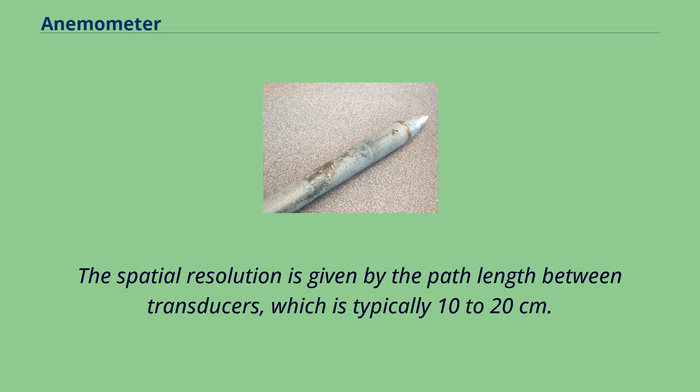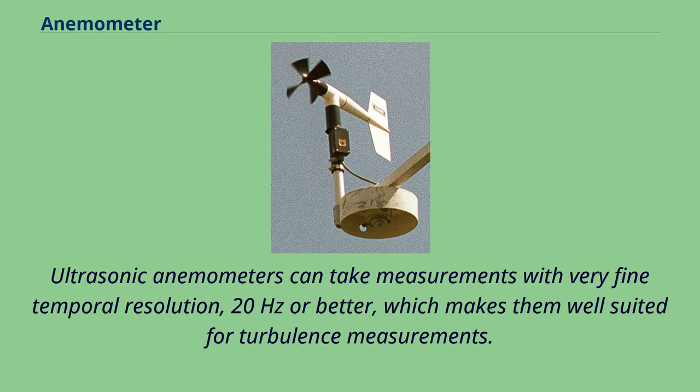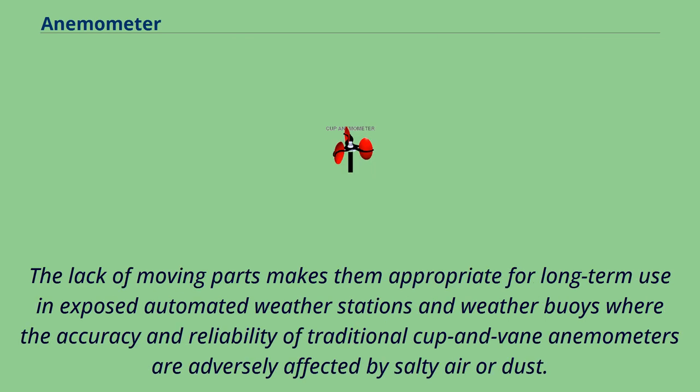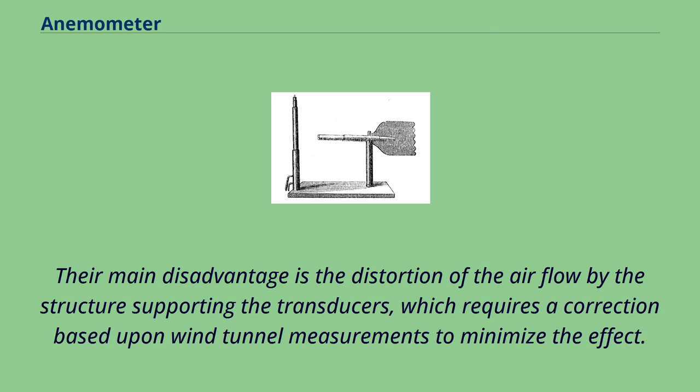The spatial resolution is given by the path length between transducers, which is typically 10 to 20 centimeters. Ultrasonic anemometers can take measurements with very fine temporal resolution, 20 hertz or better, which makes them well suited for turbulence measurements. The lack of moving parts makes them appropriate for long-term use in exposed automated weather stations and weather buoys where the accuracy and reliability of traditional cup and vane anemometers are adversely affected by salty air or dust. Their main disadvantage is the distortion of the air flow by the structure supporting the transducers, which requires a correction based upon wind tunnel measurements to minimize the effect.